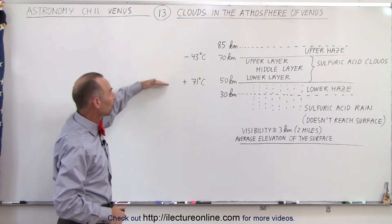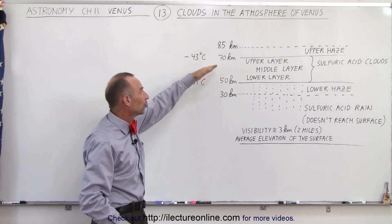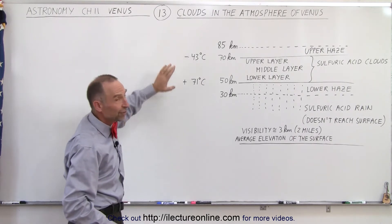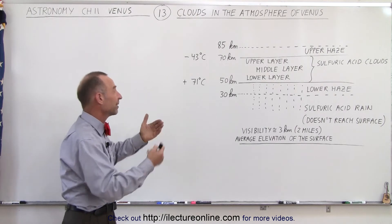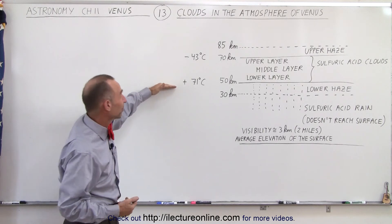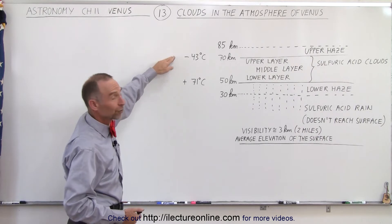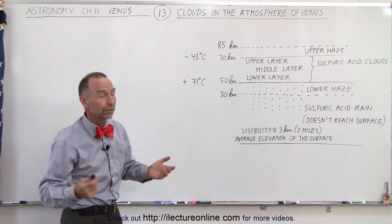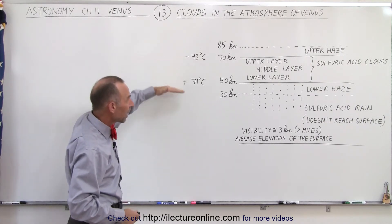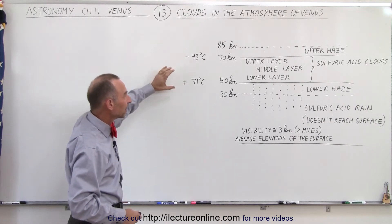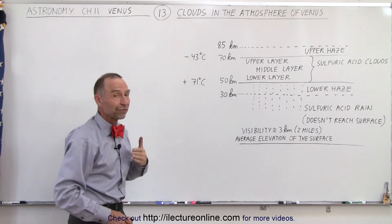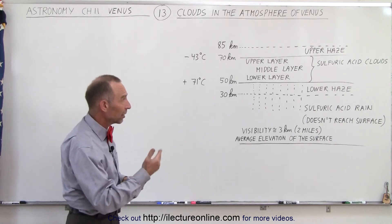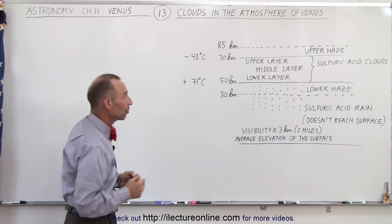The clouds, situated about 30 to 45 miles — or 50 to 70 kilometers — in the atmosphere, experience temperatures very comparable to those in our atmosphere. At the upper range it's not quite 71 degrees centigrade, which is quite hot, but it gets down to about minus 40 degrees centigrade where jetliners fly — pretty much the temperature they encounter in most places around the world. So the cloud layer has temperatures kind of comparable to what we find in Earth's atmosphere, but instead of water clouds, we have sulfuric acid clouds.